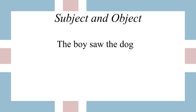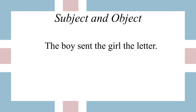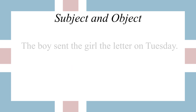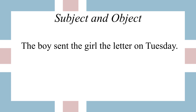Here are a couple more examples. 'The boy saw the dog' — the boy is doing the seeing so it's the subject; the dog is what's being seen so it's the object. 'The boy sent the girl the letter' — the boy is the subject; what is being sent? The letter to the girl — both are objects. Girl is actually the indirect object and letter is the direct object. 'The boy sent the girl the letter on Tuesday' — same subject, same two objects, but on Tuesday adds another object, with on as the preposition and Tuesday as the object of that preposition.